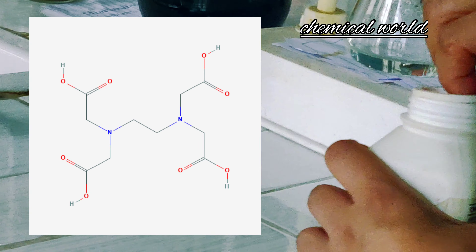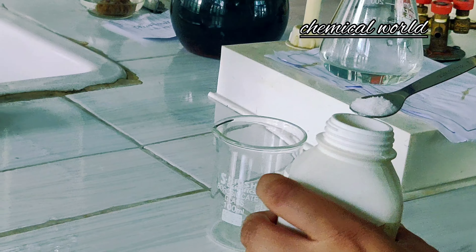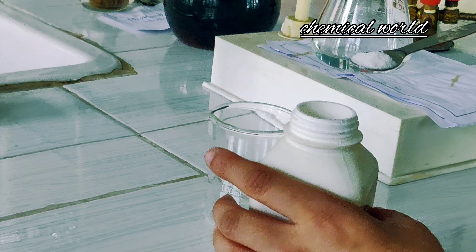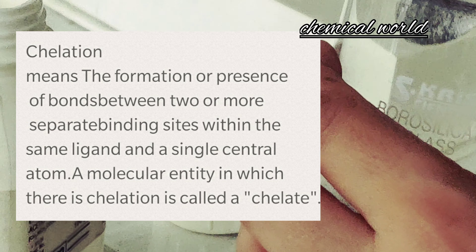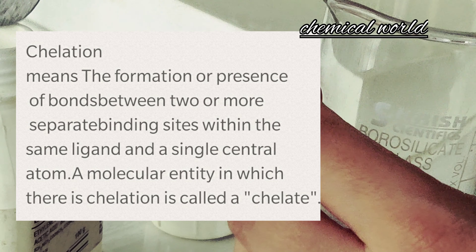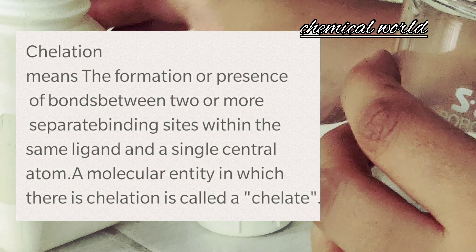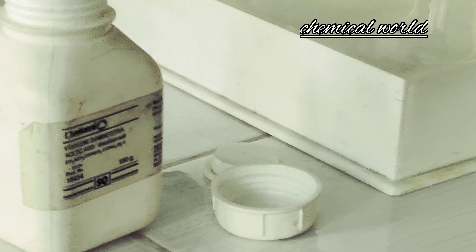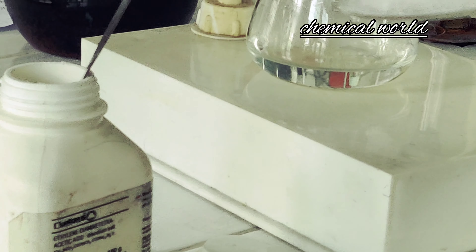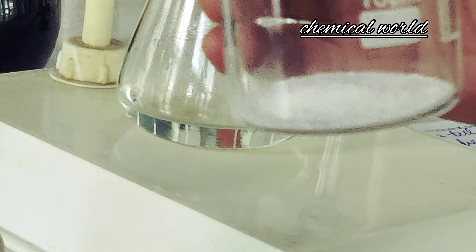Let's have a look at its structure. As you can see, it has four carboxylic acid groups and two amine groups. It coordinates with metals by six electron pairs. It's a hexadentate ligand and a powerful chelating agent.